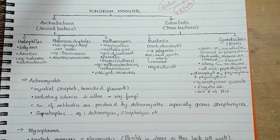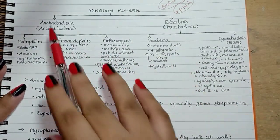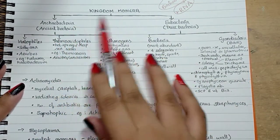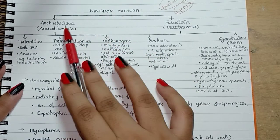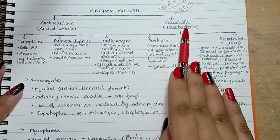So now let's look at archaebacteria. There are two types of Kingdom Monera: they are divided into archaebacteria and eubacteria.